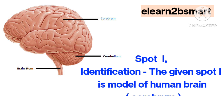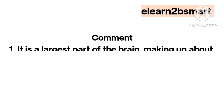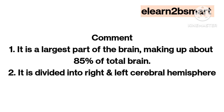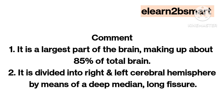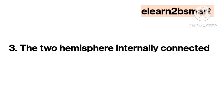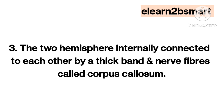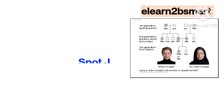Spot I. Identification: The given spot I is a model of the human brain — the cerebrum. Comment 1: It is the largest part of the brain, making up about 85% of the total brain. It is divided into right and left cerebral hemispheres by means of a deep median longitudinal fissure. The two hemispheres are internally connected to each other by a thick band of nerve fibers called the corpus callosum.